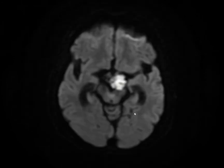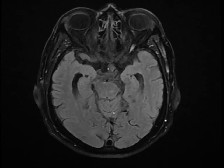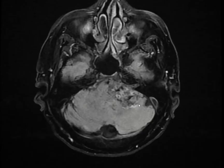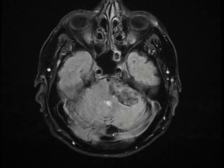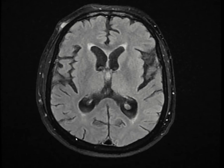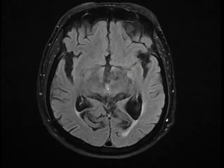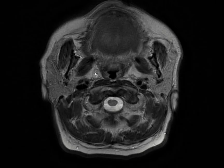If I show you the T2 FLAIR images, you can see it is hypointense, but not as hypointense as CSF — it is a bit heterogeneous. Also note there is hydrocephalus, most likely of the obstructive variety, because the fourth ventricle is not that dilated.